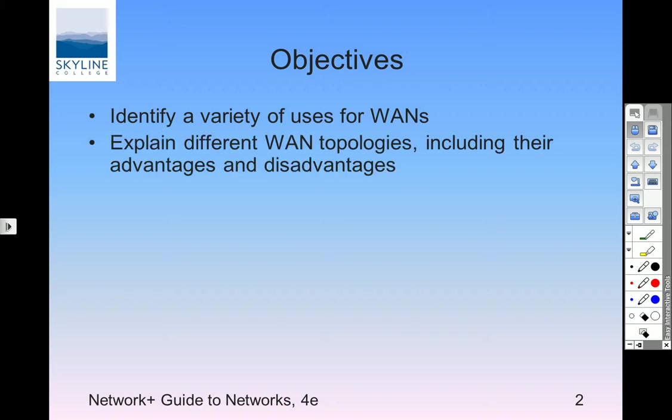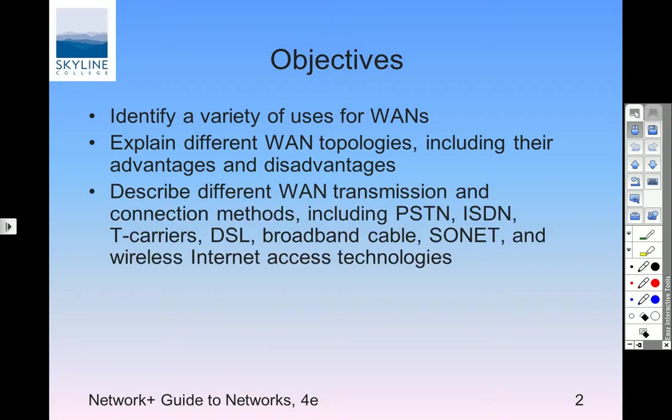They have to be put back together someplace; we're on the one that gets put back together in Richmond. If you do a trace route, you'll see routers in Richmond. Between WAN topologies, including their advantages and disadvantages — the WAN topologies honestly are not going to be radically different from LAN topologies. We're going to have stars, bus arrangements, and daisy chain arrangements.